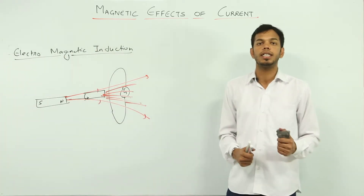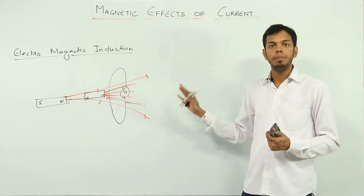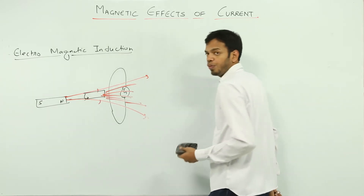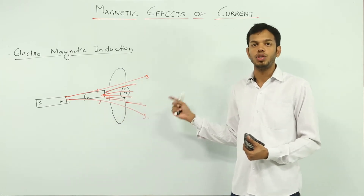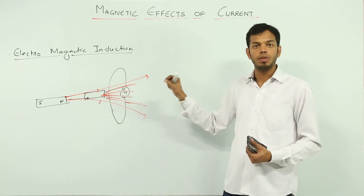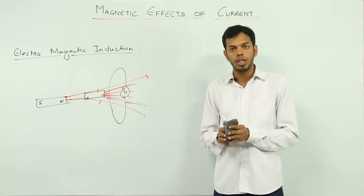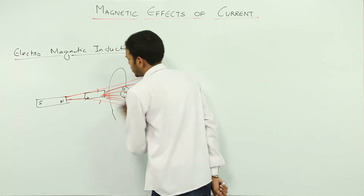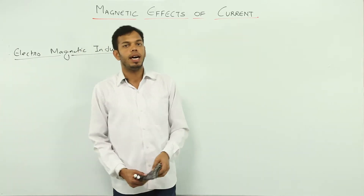Electromagnetic induction is the phenomenon of production of induced current by changing magnetic flux or by changing magnetic field. To summarize the two observations: whenever flux linked with the coil changes, an induced EMF is produced in it; and this induced EMF will last as long as the change in flux continues.